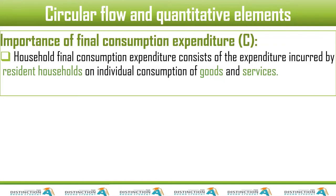Household final consumption expenditure consists of the expenditure incurred by resident households. Resident households means all of us residing in South Africa for more than a year. Those who are visiting are tourists, so they are excluded. Resident households doesn't necessarily mean South Africans — it means people who stay in South Africa, and that includes foreigners who reside in South Africa on a permanent basis.